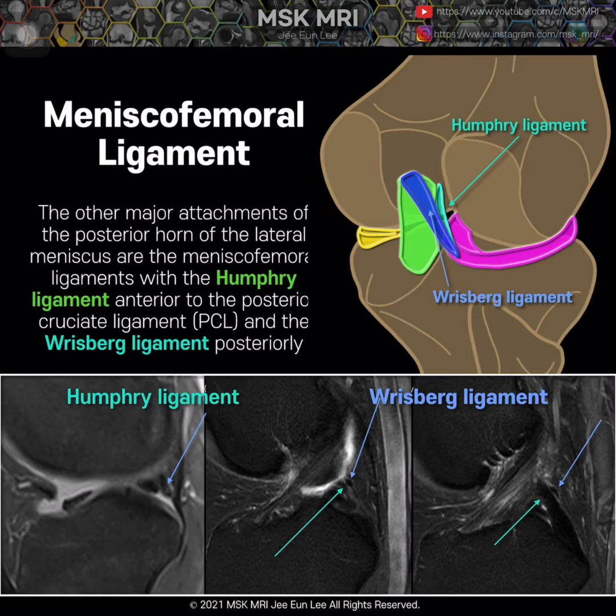Hi, this is Yen Lee from MSK MRI. I'm talking about the meniscus femoral ligament. The major attachments of the posterior horn of the lateral meniscus are the popliteomeniscal fascicles — not shown here — and this meniscus femoral ligament.